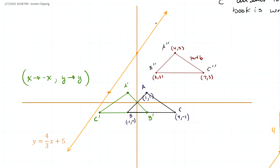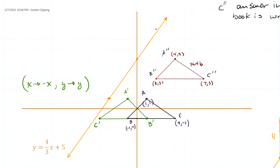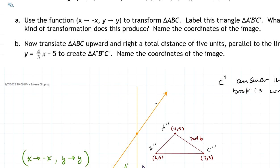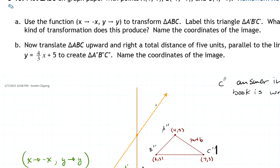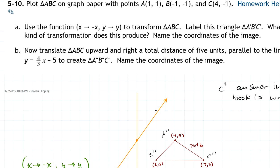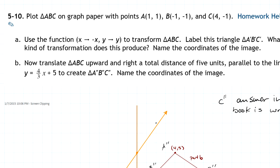What you're looking at is my complete solution for question number 10. Let's go through and take a look at it. It says to start by plotting the points A, B, and C, where A is at (1, 1), B is at (-1, -1), and C is at (4, 1).